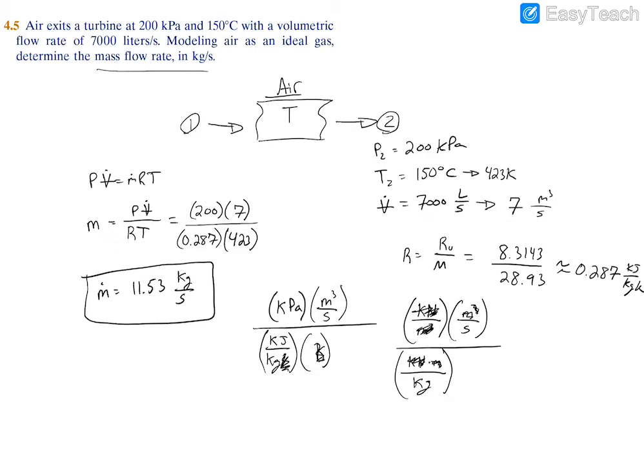This meter cancels out with this meter, and then you're left with kilograms per second. As you can see, the kilograms is in the denominator of a denominator so it moves over the top, and the seconds is in a denominator of a numerator so it moves to the bottom. You're left with kilograms per second, which is your unit.